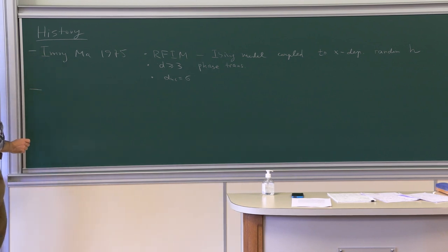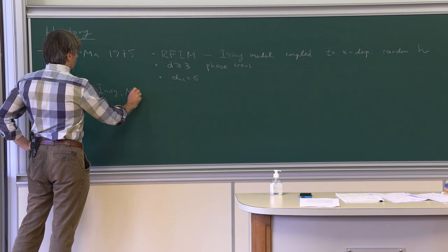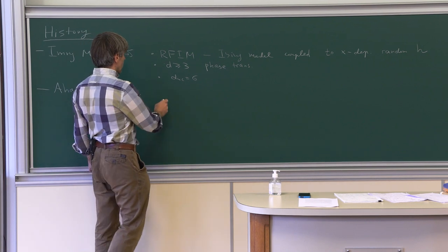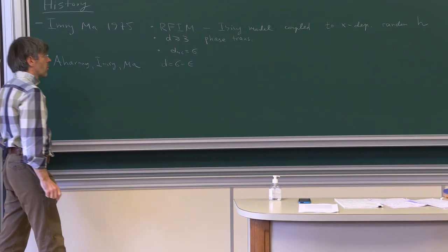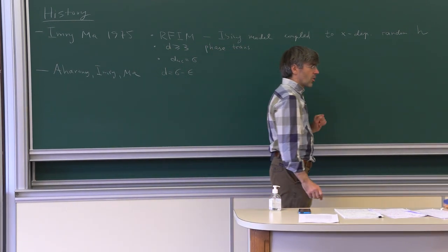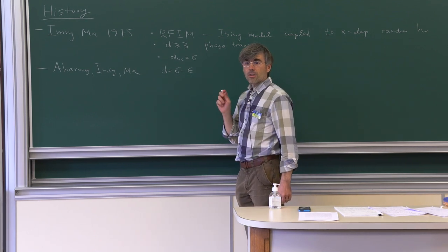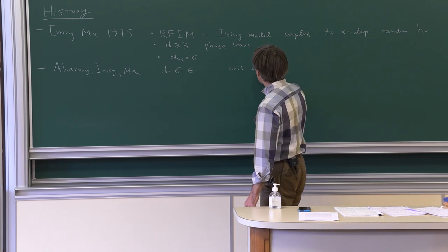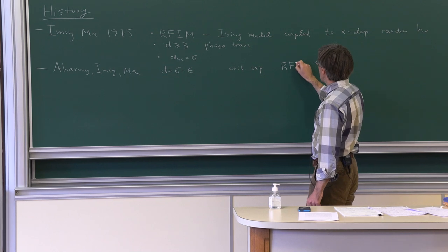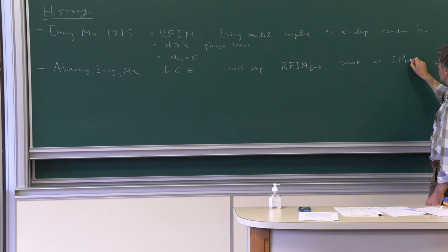Then, next year in 1976, there was an important paper by Aharoni, Imry, and Ma. Since the upper critical dimension is 6, one can do the epsilon expansion and compute the critical exponents in d equals 6 minus epsilon. They observed that to all orders in perturbation theory in epsilon, the random field Ising model has critical exponents at the phase transition which are exactly the same as those for the normal non-disordered Ising model in 4 minus epsilon dimensions. This phenomenon was called dimensional reduction.